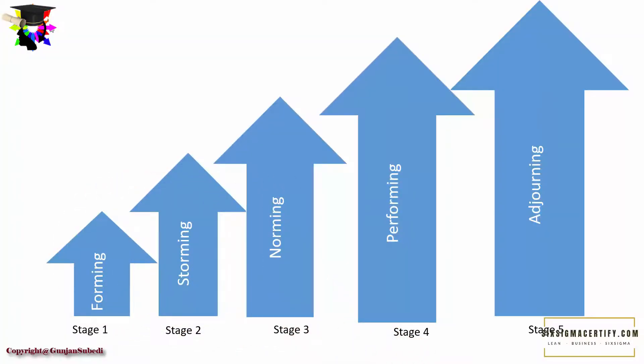The first stage is forming, the second is storming, the third stage is norming, the fourth stage is performing, and the fifth stage is adjourning. In some books you may see that there are only four stages of team development, generally up to the performing phase. Nevertheless, there is also the adjourning phase.